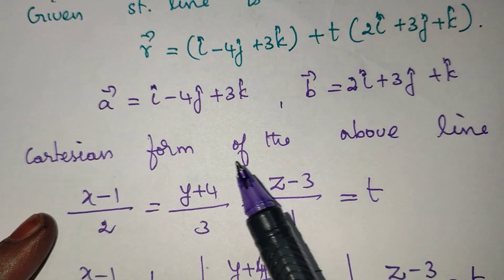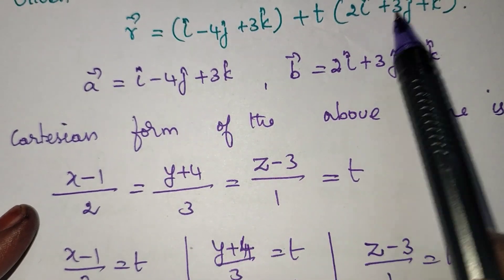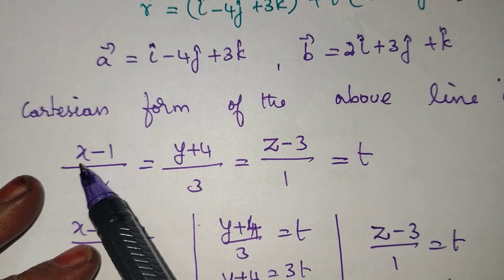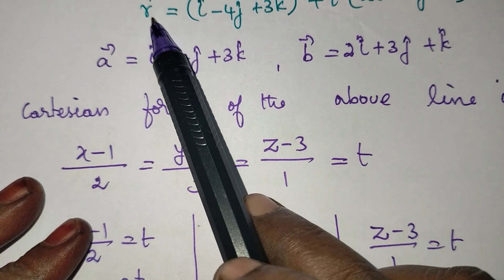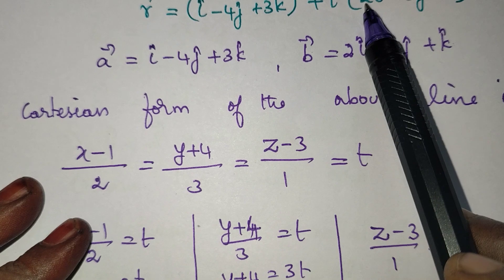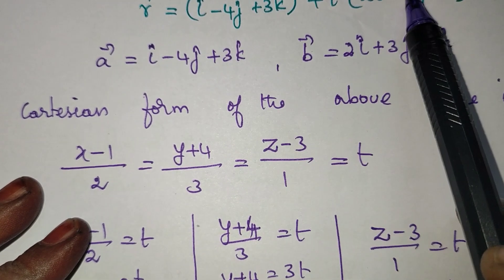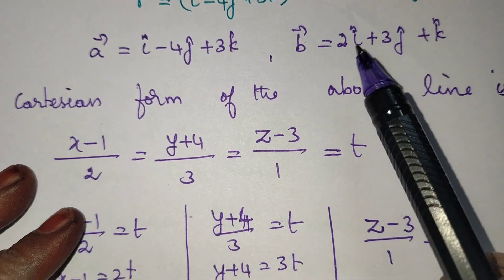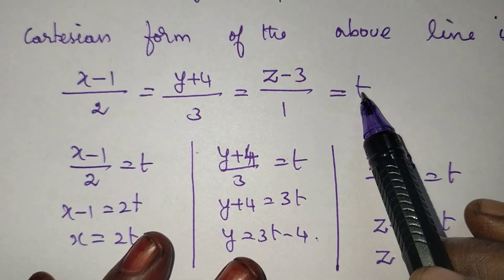The line in Cartesian form is: (x - 1)/2 = (y - 4)/3 = (z - 3)/1. This is the Cartesian form, and that is equal to t.